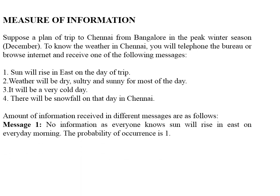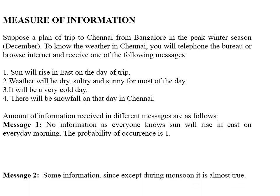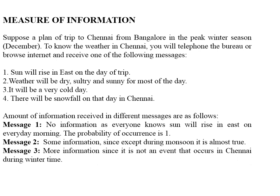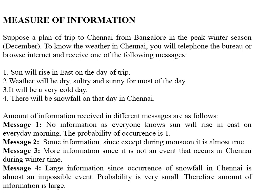The first message will carry no information, as everyone knows that the sun will rise in the east every morning — the probability of occurrence for this sure event is 1. The second message will carry some information since, except during monsoon, it is almost true. The third message conveys slightly more information since it is not a common event that Chennai is cold in winter. The fourth message — that there will be a snowfall in Chennai — conveys large information since snowfall in Chennai is almost an impossible event with very small probability of occurrence.